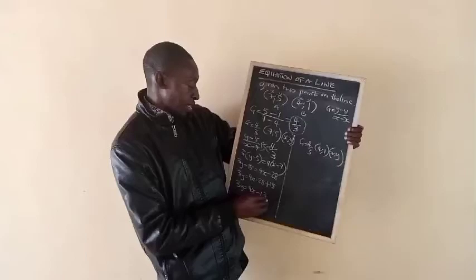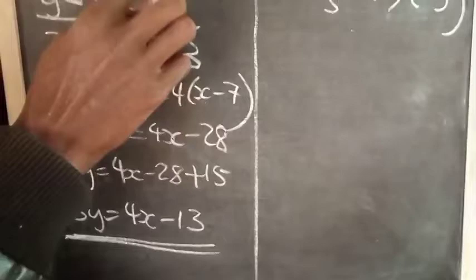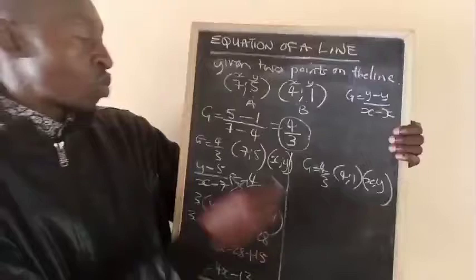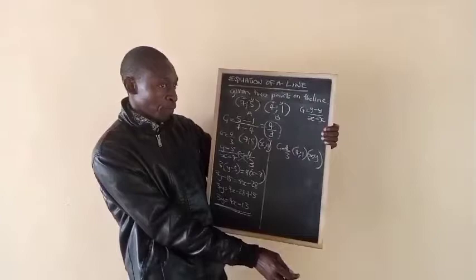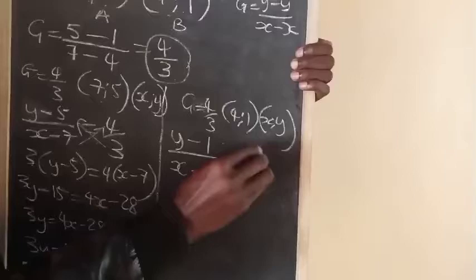we get minus 13. So our equation is 3y equals 4x minus 13. If I had used the gradient 4 over 5 with the gradient and bracket 7, 5, then I could have also gotten the equation using bracket 4, 1. Still,